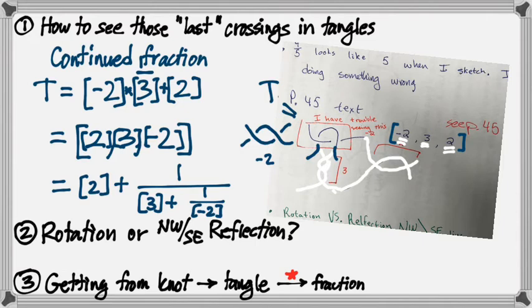This continued fraction representation has an odd number of terms, an odd length. But we wouldn't call this a canonical representation because not all the terms have the same sign. It turns out there is a way to re-express this continued fraction using either all positive or all negative twists. So this isn't in its canonical form. That's okay, though.